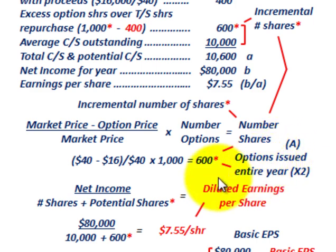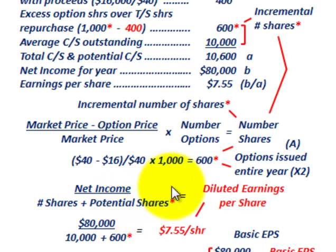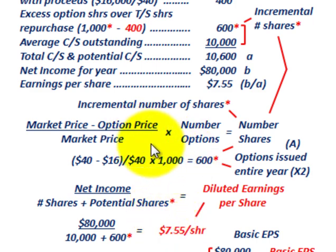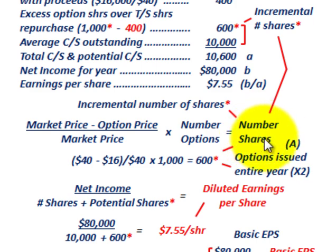To determine diluted earnings per share for Case 1, we take net income of $80,000 and divide it by average common shares outstanding of 10,000 plus the 600 incremental potential shares from the options. That gives us diluted earnings per share of $7.55. Remember the formula: market price minus option price, divided by market price, times number of options equals your incremental shares.